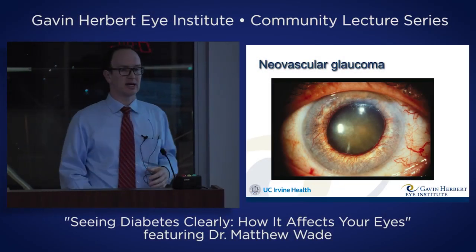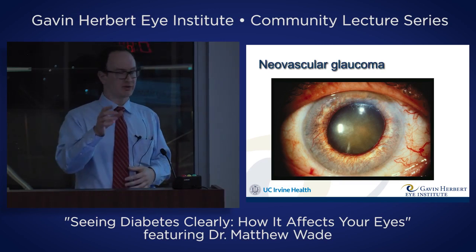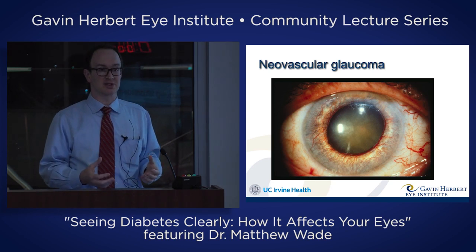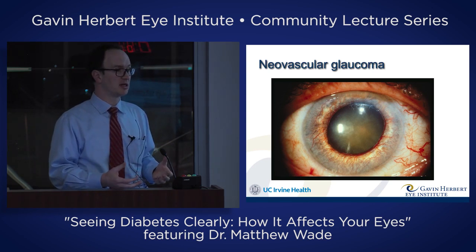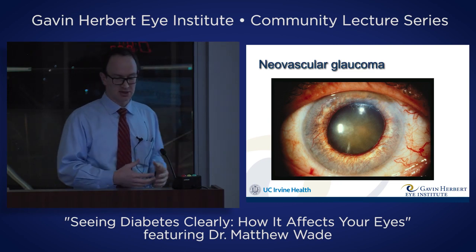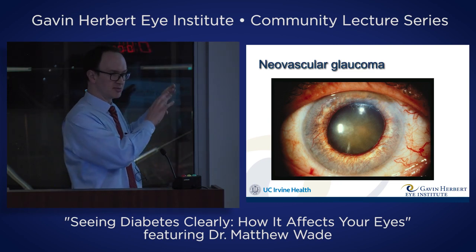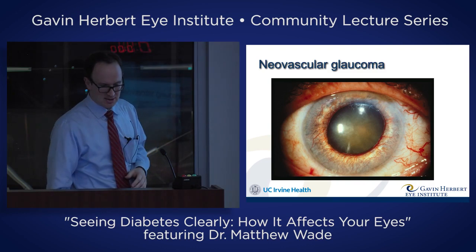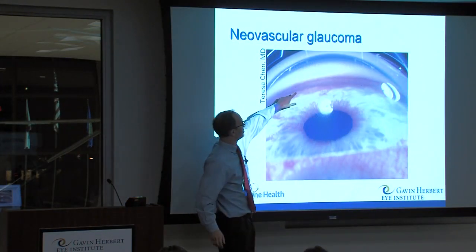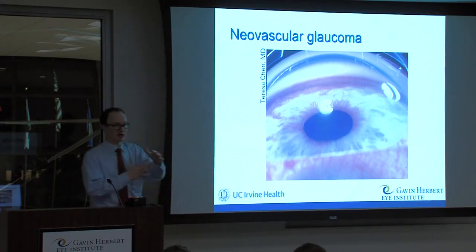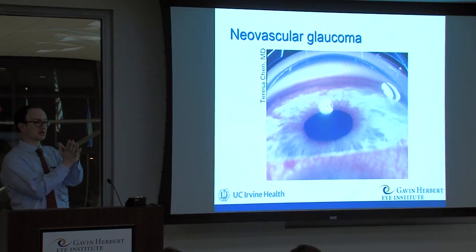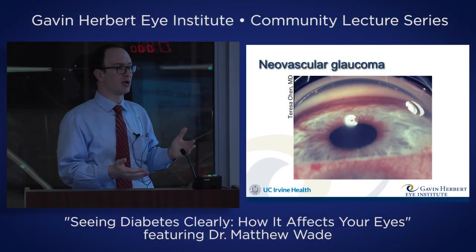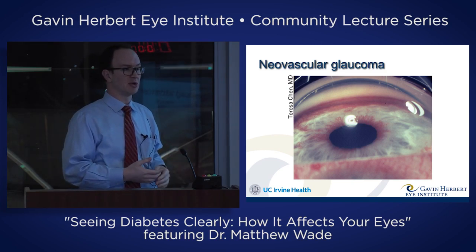As Dr. Mehta talked about, we get new blood vessels from VEGF. Can you see all those red blood vessels on this iris? Those aren't supposed to be there — they're new blood vessels formed because VEGF has been secreted. If you look into the angle, you can see those blood vessels crawling up against it. They're going to eventually contract and pull the iris closed over that angle so the pressure rises. When that happens, typical eye drops don't work and we have to resort to surgery to help lower the pressure.